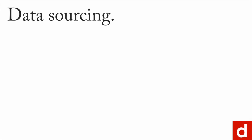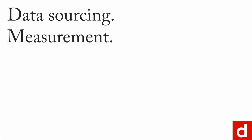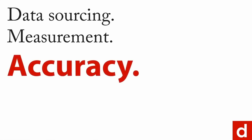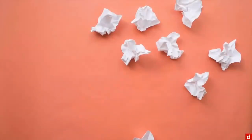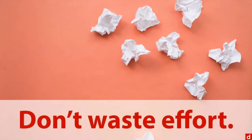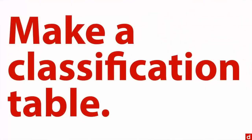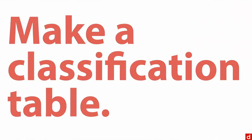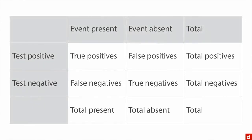When talking about data sourcing and measurement, one very important issue has to do with the accuracy of your measurements. You don't want to waste effort. One way of doing this in a quantitative fashion is to make a classification table. You talk about positive results and negative results. The middle two columns talk about whether an event is present — whether your house is on fire, whether a sale occurs, whether you've got a tax evader — so whether a particular thing is actually happening or not.